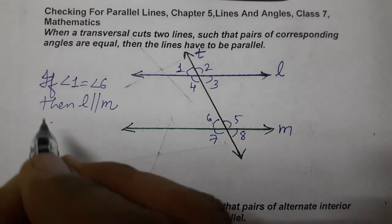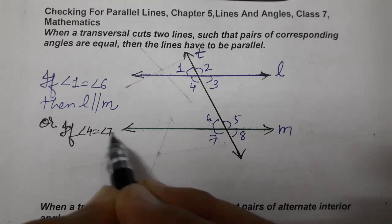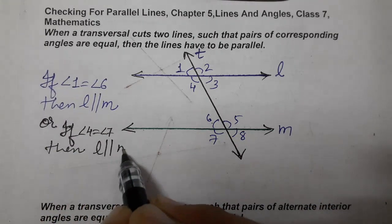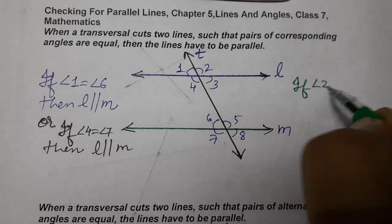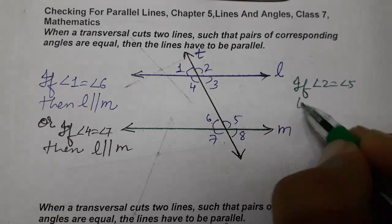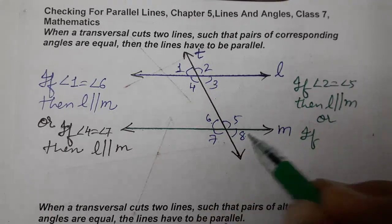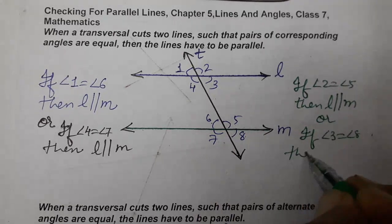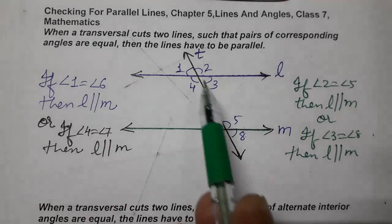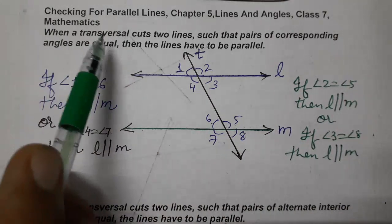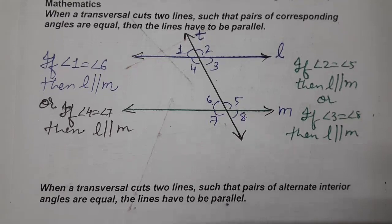Second: if angle four equals angle seven, then L is parallel to M. Third: if angle two equals angle five, then L is parallel to M. Or, if angle three equals angle eight, then also the lines are parallel. In any of the four cases, if any one is applicable, the lines are said to be parallel. So this is checking for parallel lines using corresponding angles.